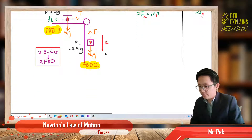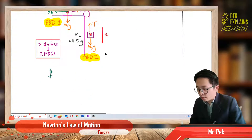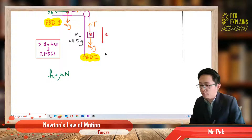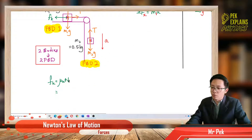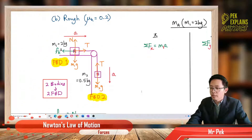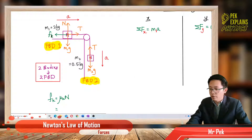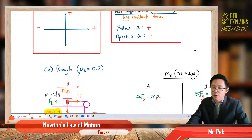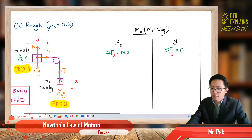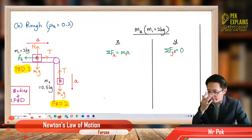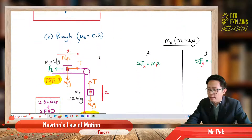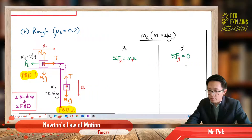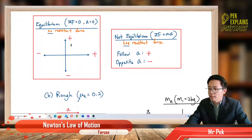Now we have friction, so we need to find the normal force using the formula: friction = μK × N. To find the normal force, we need to consider the Y component for mass A. For mass A's Y component, there is no vertical acceleration, so Fy = 0. Going up is positive, going down is negative.